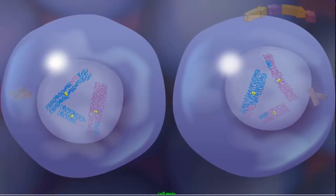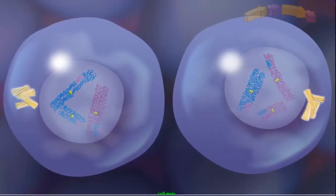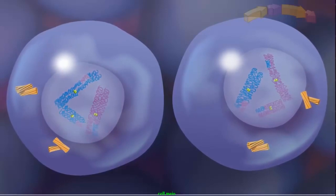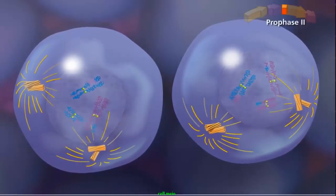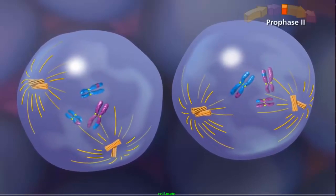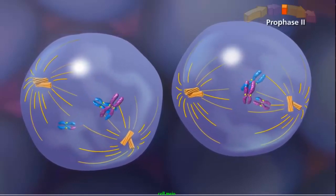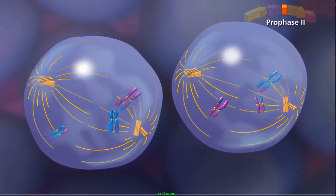meiosis II begins without the chromosomes going through another round of DNA replication. Centrioles again duplicate and begin moving to opposite poles of each cell. In prophase II, the sister chromatids condense while the spindle starts to form as the nuclear envelope disappears.